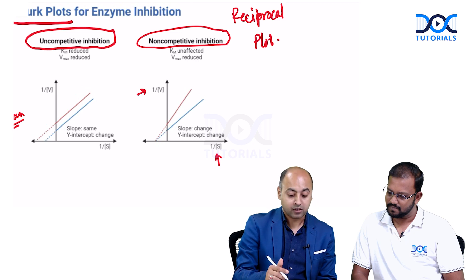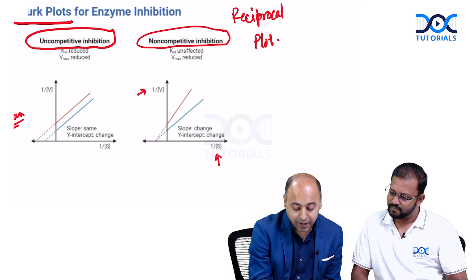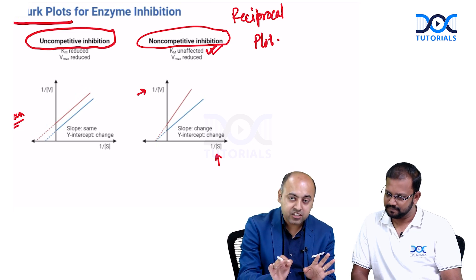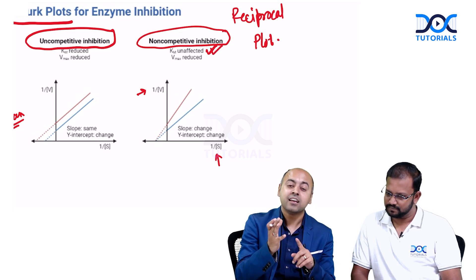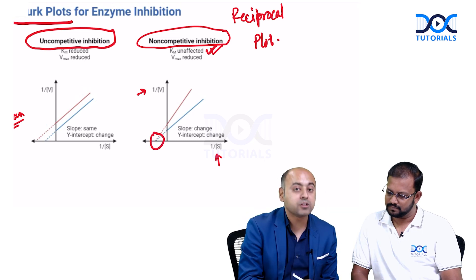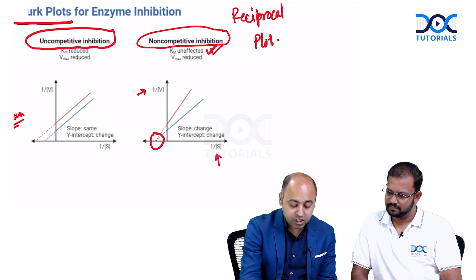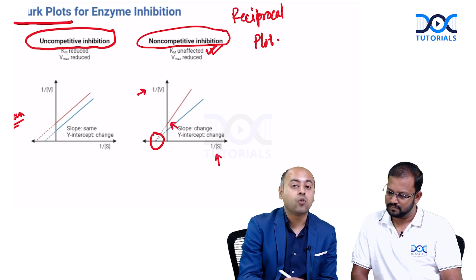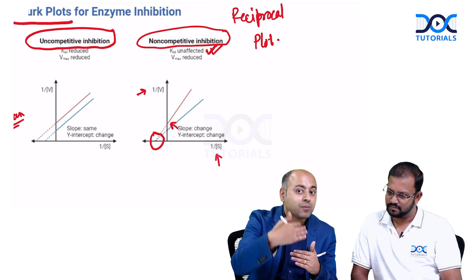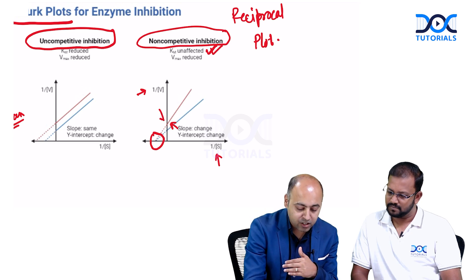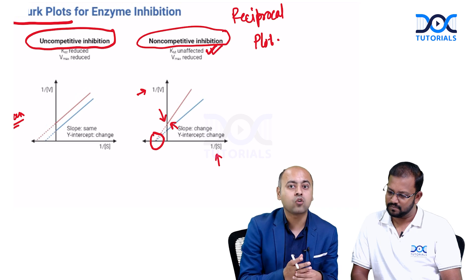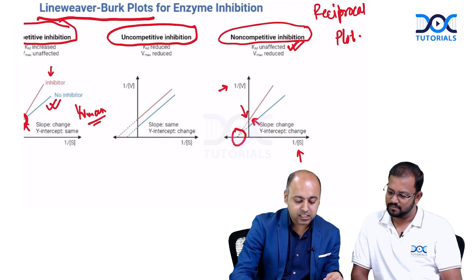In non-competitive inhibition, by definition, Km is not changed. Since Km appears on the x-axis, the x-axis intercept remains the same. However, Vmax will decrease — correspondingly, 1/Vmax will increase — so you find the y-axis intercept is increased in the case of non-competitive inhibition.